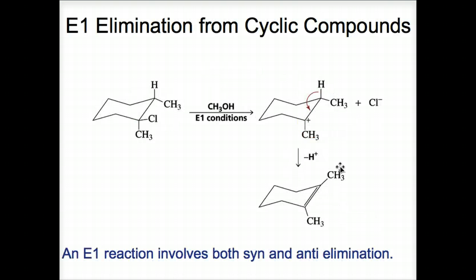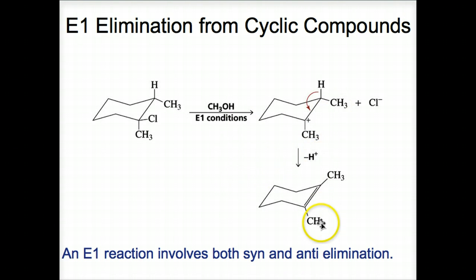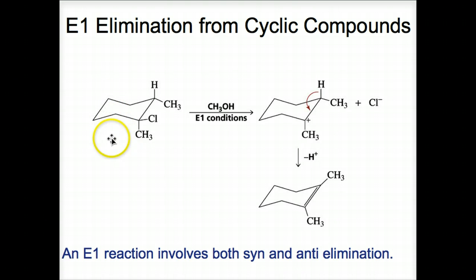Let's now look at E1 elimination from cyclic compounds. In an E1 elimination reaction of a substituted cyclohexane, the reaction is not concerted, so the two groups that are eliminated do not have to both be in axial positions. The first step is the formation of a carbocation. It then loses a proton from the adjacent carbon that is bonded to the fewest hydrogens — following Zaitsev's rule — forming the double bond, and we have formed an alkene beginning with this cyclic compound.